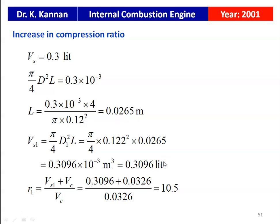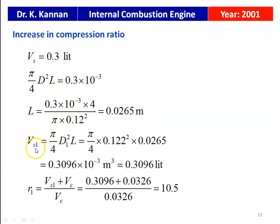Due to reboring, there is a change in the compression ratio. The original stroke volume is 0.3 liters: (π/4)d²L = 0.3 × 10⁻³ m³, giving stroke length L = 0.3 × 10⁻³ × 4 / (π × 0.12²) = 0.0265 meters. For the new rebored engine, the new swept volume Vs1 = (π/4) × 0.122² × 0.0265, which calculates to 0.3096 liters.